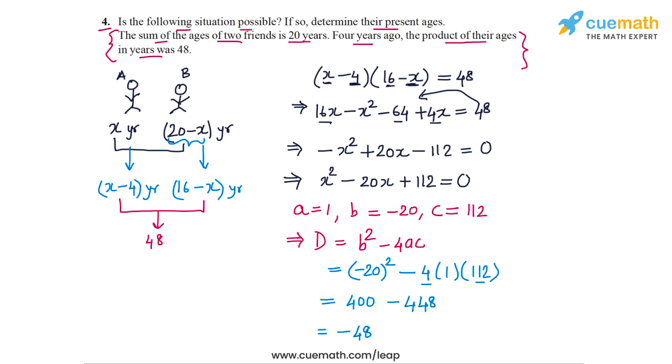So the discriminant turns out to be negative, which means that this equation does not have real roots. There is no real value of x which satisfies this equation. And that means that the situation described to us is not possible, because we could not find any value of x which satisfies the situation. So the answer to this question is that no, this situation is not possible.